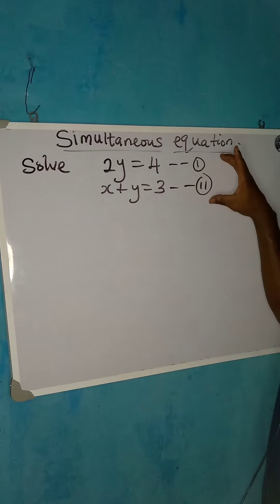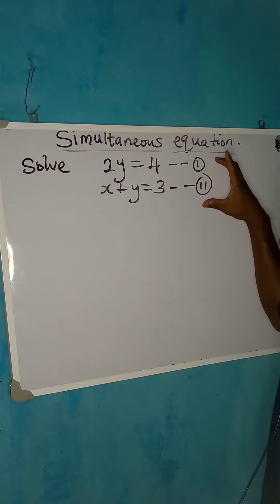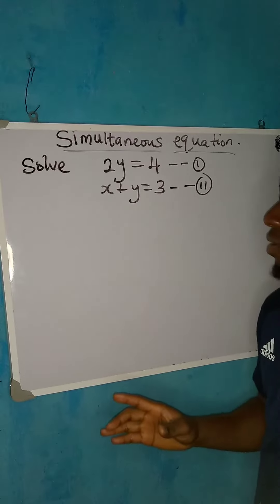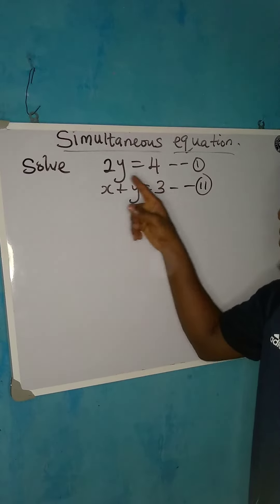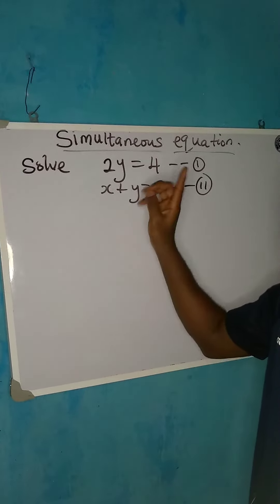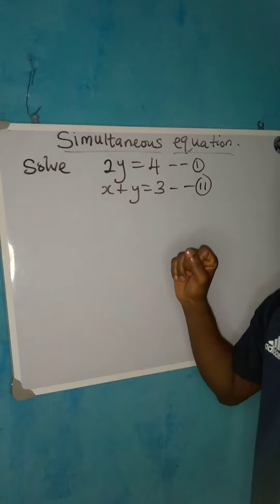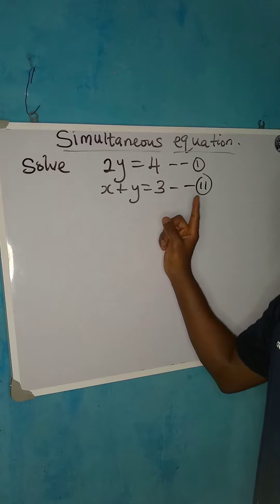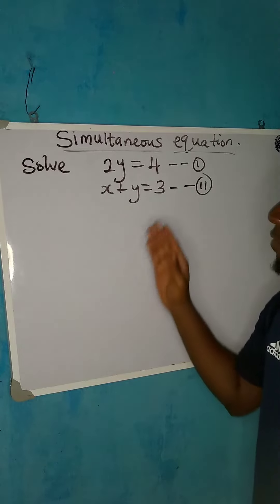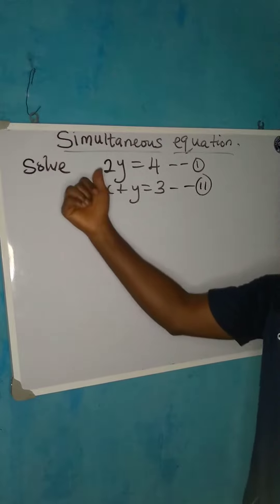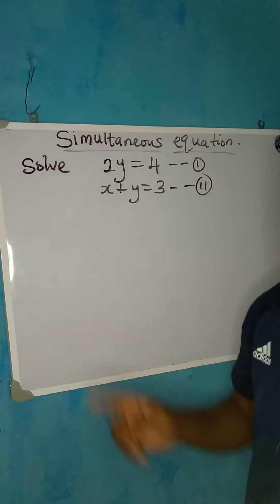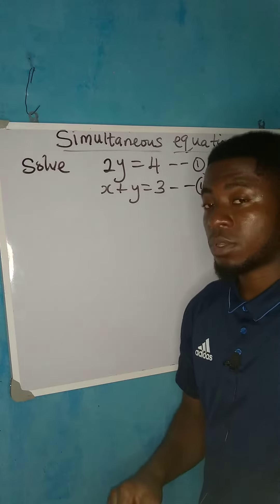This is a simultaneous equation because we are going to solve the two of them together. Although by looking at equation 1, we can know the value of y, but in equation 2, we cannot find the value of x or y unless we substitute the value that we have from equation 1. Now, let's take a look at how we solve it.